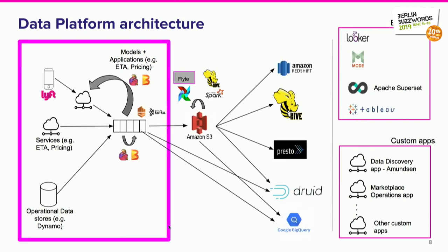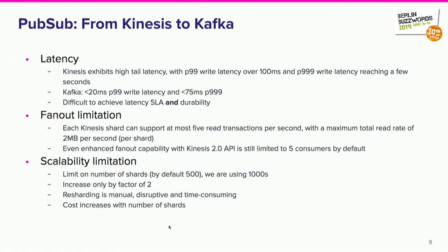Our focus here is on the streaming side. For the pub/sub system — the transport of messages from a producer to a consumer — we are going from Kinesis to Kafka. Lyft traditionally had everything running on Kinesis, but there have been challenges as the business and data volumes grow, and requirements for faster processing also grow. One key issue is latency: Kinesis has very high tail latency. With Kafka we can have much faster durable writes, achieving a good latency SLA while also having a reliable system where we don't lose messages. With Kinesis you have to trade one for the other; with Kafka we don't have to make that choice.